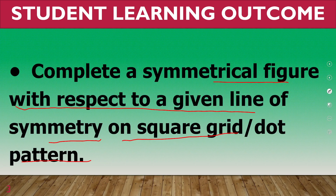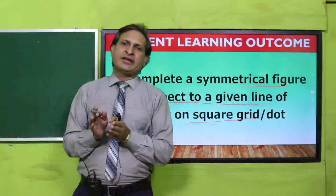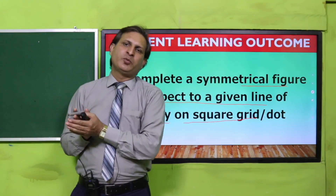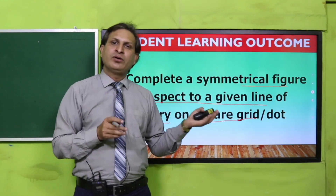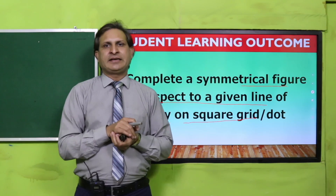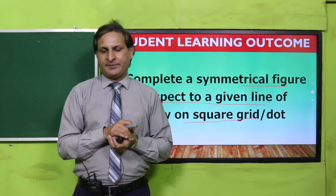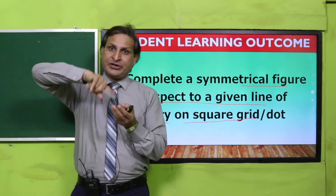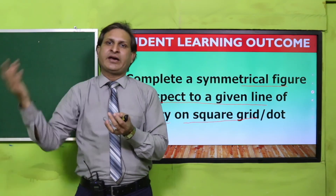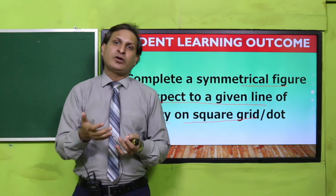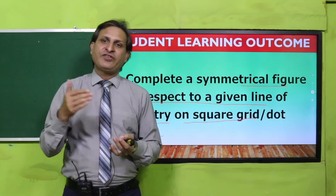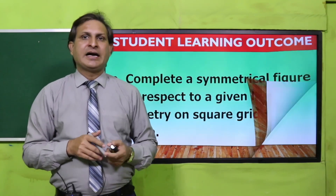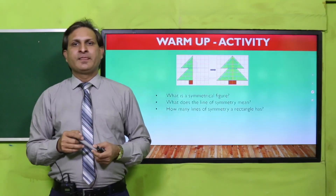हमने square grid या dotted pattern के ऊपर line of symmetry को complete करना है। देखना है उसके right side पे symmetry के जो round है उसको हम लोगों ने दूसरी side पे figure को complete करना है।